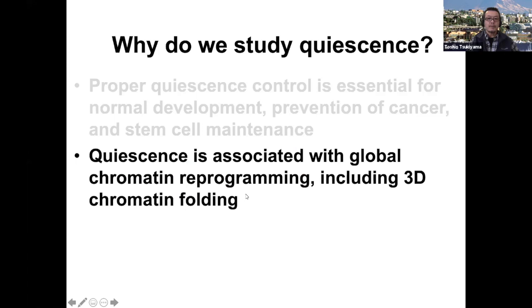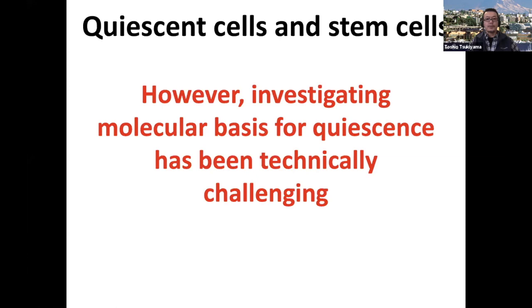It's been very clear that quiescence is associated with really global chromatin and transcription reprogramming, including three-dimensional chromatin folding, which I'm going to talk about. However, it has been extremely difficult to study quiescence, especially in mammalian systems, because most quiescent cells don't have specific markers. And even if you can separate them from tissues, as soon as you put them in a cell culture system, they start dividing. So it's very hard to keep them in quiescence state, and obtaining sufficient numbers of pure quiescent populations has been a huge challenge.